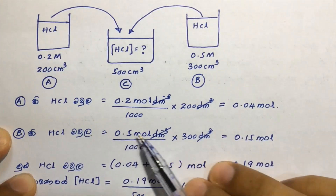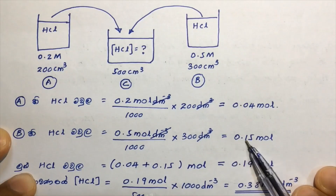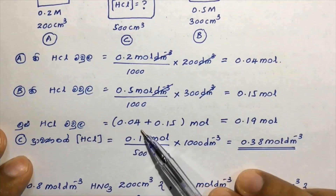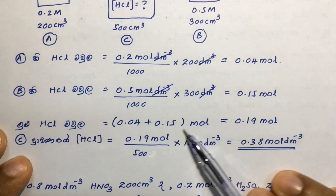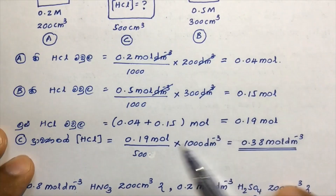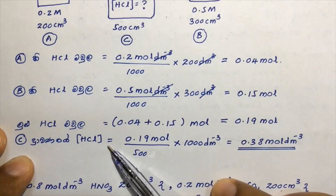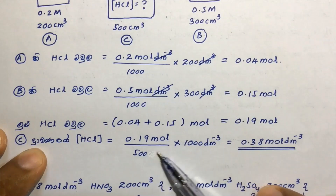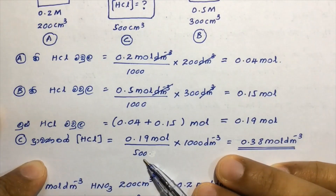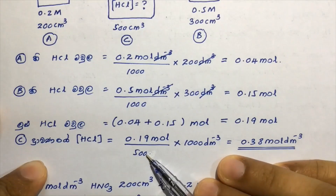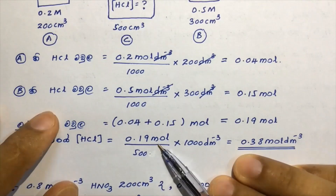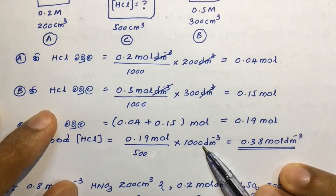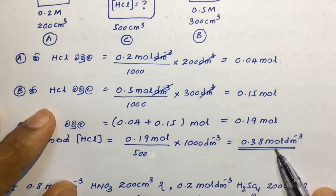B-VLHCL is the same as 1.5. B-VLHCL is the same as 2.5. B-VLHCL is the same as 1.5. Now we have to write down 2.8 MOLDM.